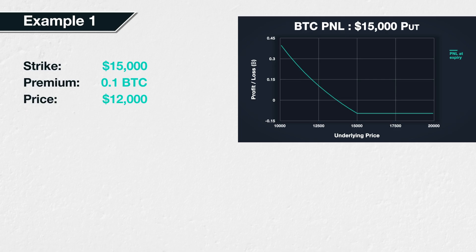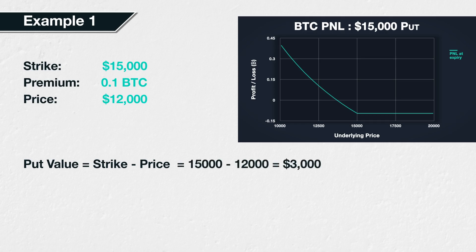Remember, the balances and profits are paid in Bitcoin, so our end result will be an amount of Bitcoin that we have made. The first step is exactly the same as the steps we took in lecture 5.3, where we calculated the profit or loss of put options that only use dollars. We first calculate how much the option is worth in dollars at expiry. The price of Bitcoin at expiry is $12,000 and the strike price is $15,000. So to calculate the value of the option in dollars, we subtract the underlying price from the strike price: $15,000 minus $12,000 equals $3,000. The option is therefore worth $3,000 at expiry.